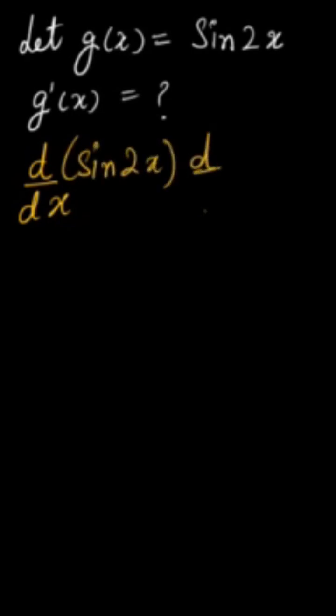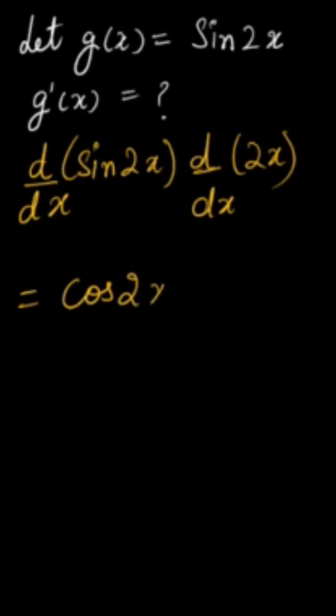So differentiation of sin is cos. So here we will write cos 2x, where sin 2x is there so cos 2x. 2x differentiation is 2. So this is equals to 2 times cos 2x.